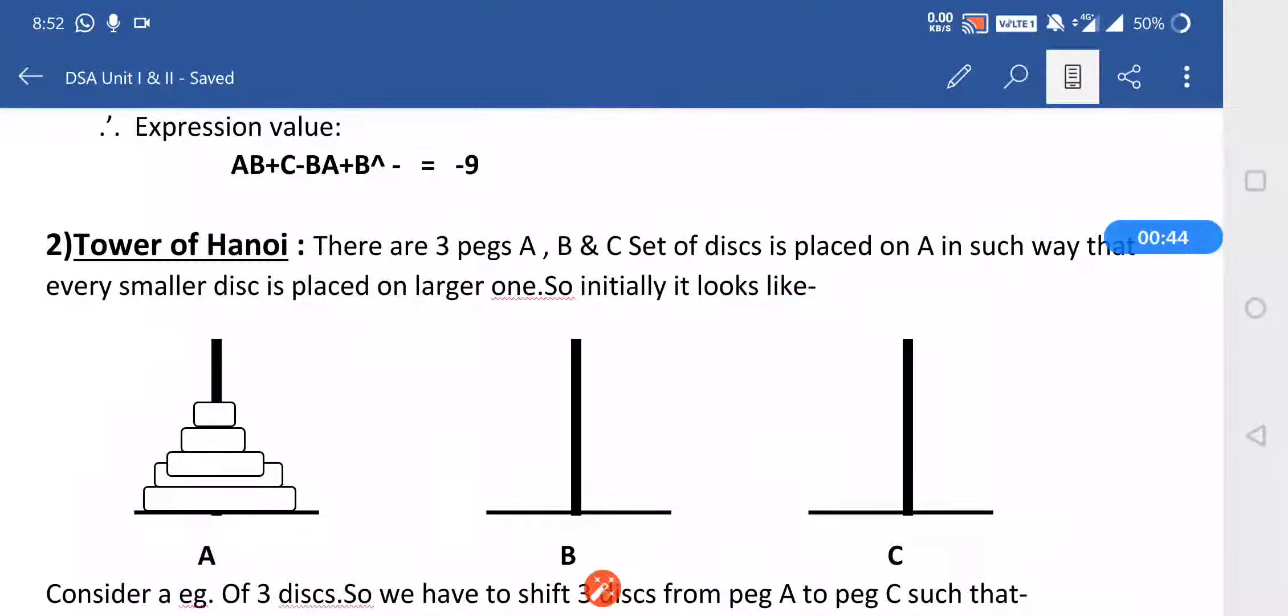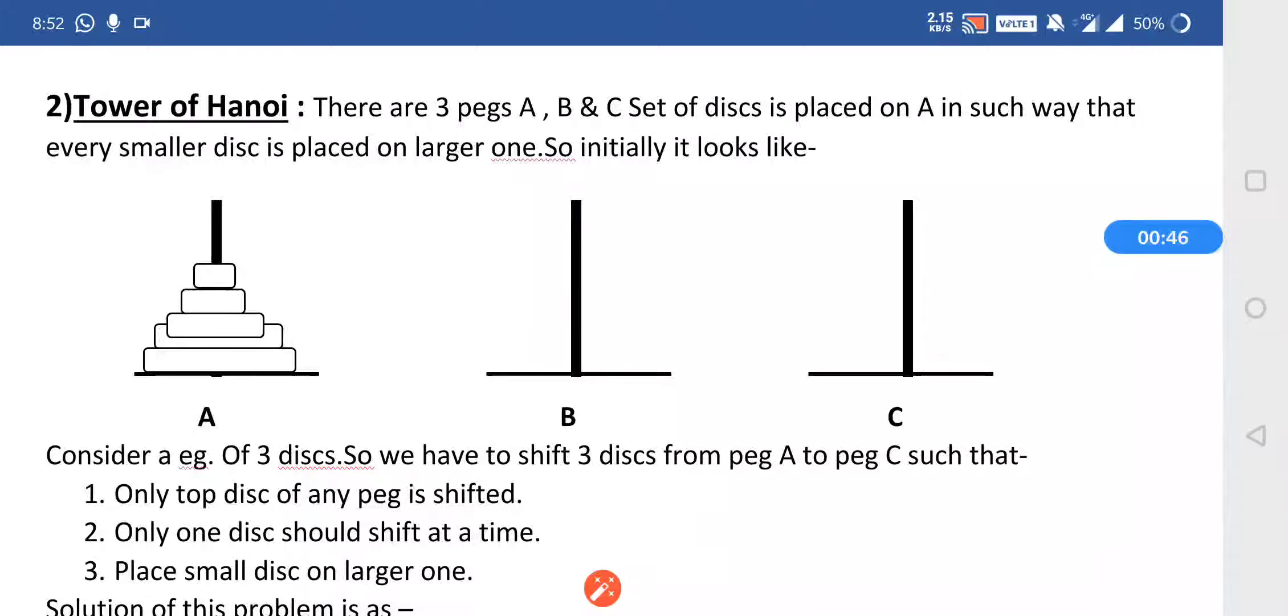The number of disks can be different like 3, 4, 5, or 6, but they will always be between these three pegs only. By using these three pegs, we have to transfer all the disks from A to C.